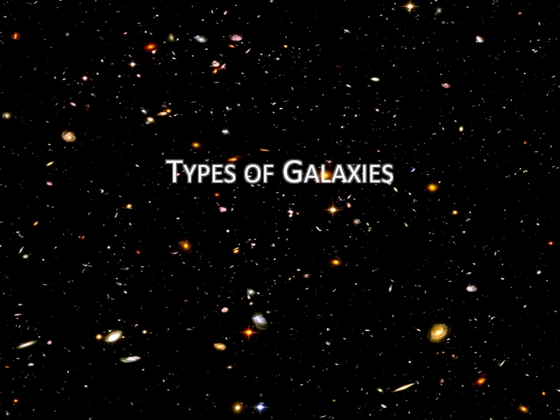The image in the background is called the Hubble Deep Field. The size of this piece of sky is about the size of a grain of sand at arm's length. The Hubble Space Telescope looked at this tiny region of sky for 10 days. Every spot you see is an individual galaxy. Imagine, if there are this many galaxies in a random spot of sky the size of a grain of sand, just how many galaxies must there be in our universe?